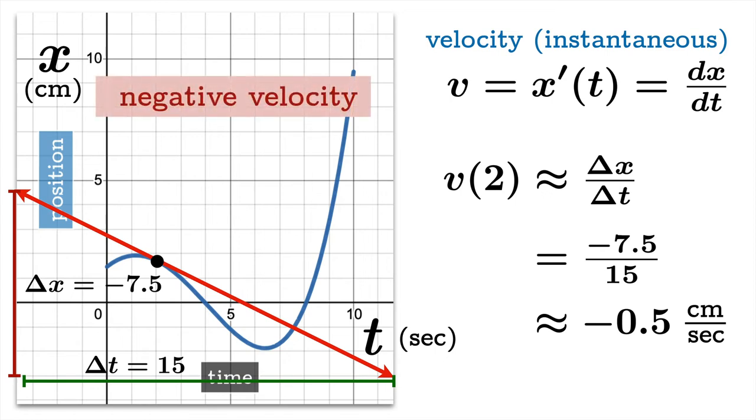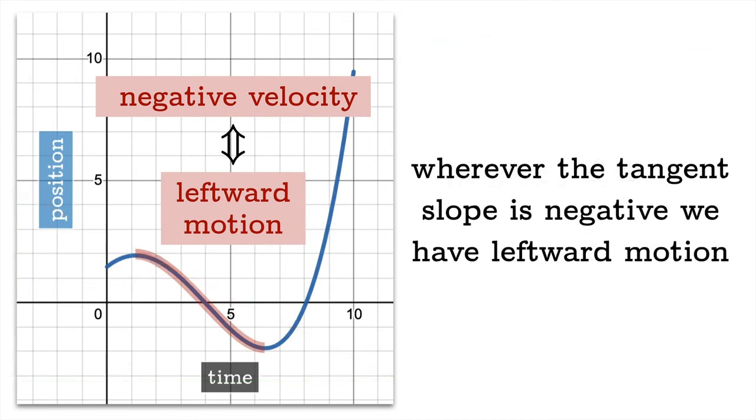Now generally negative velocity corresponds to leftward motion. So we know that this particle is moving to the left at a rate of 0.5 centimeters per second at this moment. And wherever the tangent slope is negative we have leftward motion.